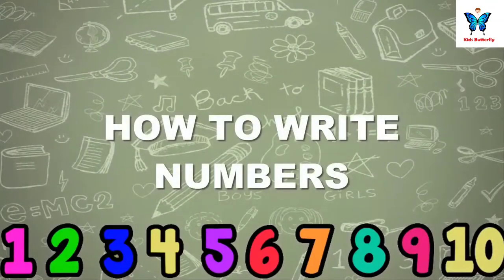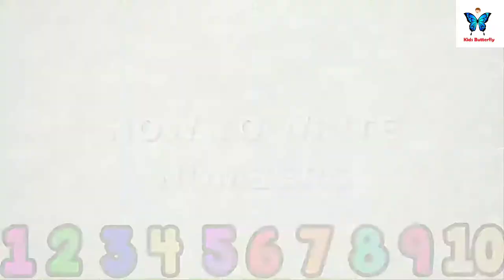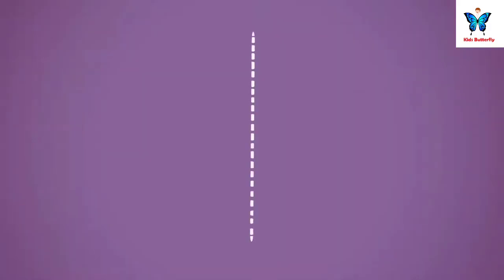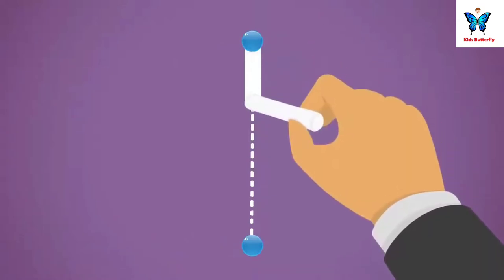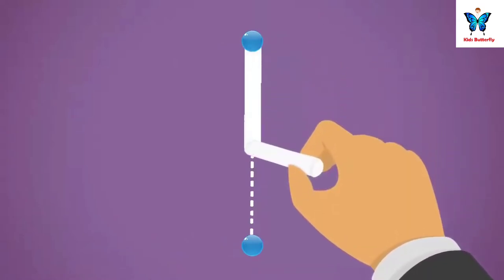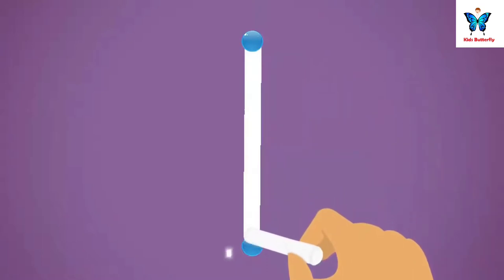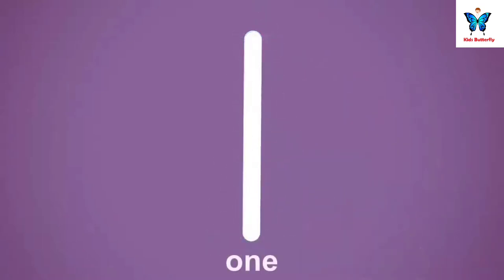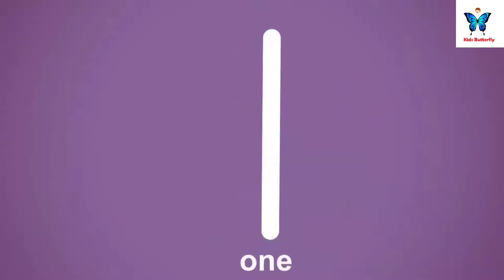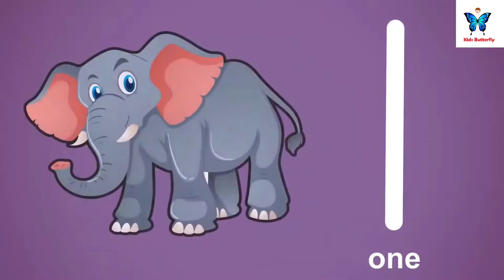We will learn how to write numbers. 1. Follow the dots to write the number. 1. 1 elephant.